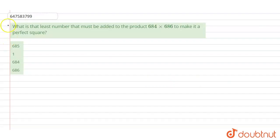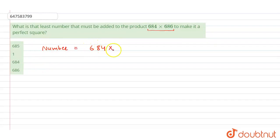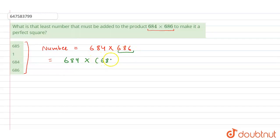So this is your question: What is the least number that must be added to the product of this to make it a perfect square? So the number we have is 684 into 686. We have to add a number out of these four options which will make this a perfect square. So 684 into 686, and we can write this as 684 plus 2, which makes sense.